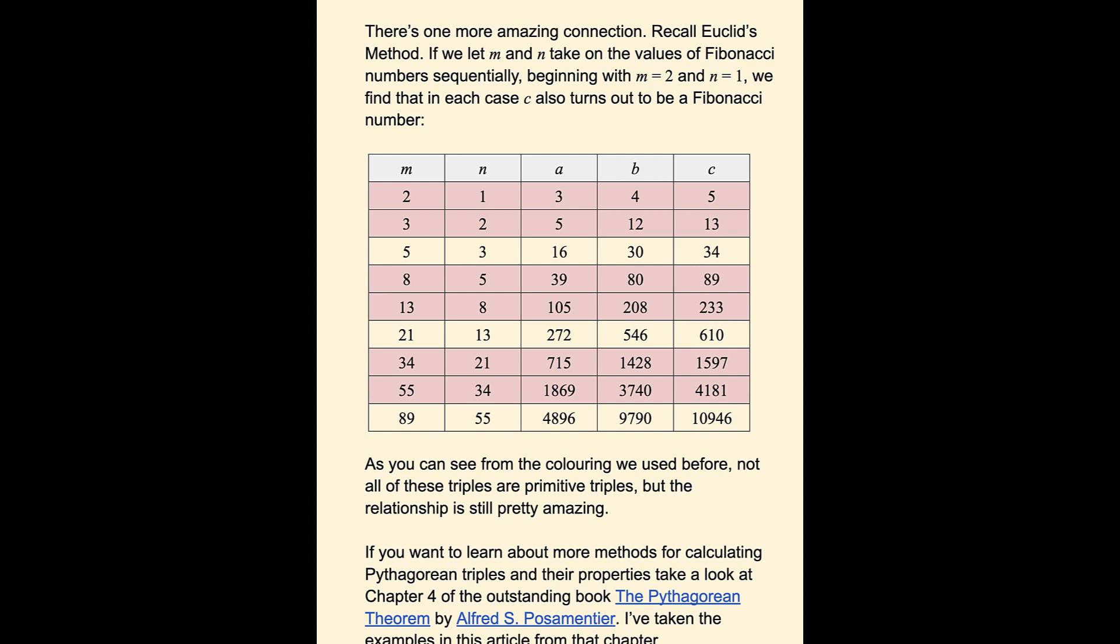C also turns out to be a Fibonacci number. So here we have a table. M is 2, N is 1. Those are both sequential Fibonacci numbers.